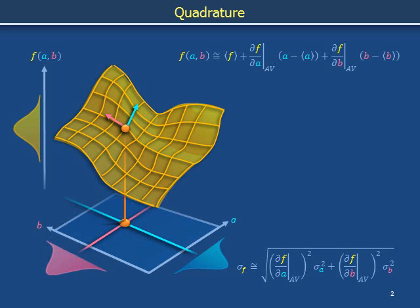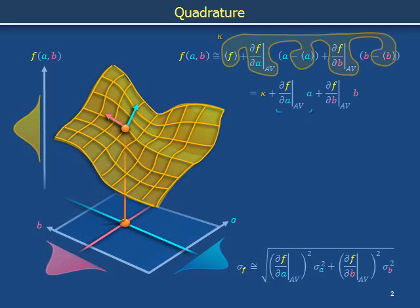There are two variables on the right-hand side of this equation: A and B. The constants in this expression are the quantities surrounded by angle brackets, along with the partial derivatives evaluated at the average values of A and B. Together, these form an additive constant that we refer to as kappa. Writing kappa out front leaves behind two products: the first is the slope of F along the A direction multiplied by the value of A, and the second is the slope of F along the B direction multiplied by B. We refer to these products as functions alpha of A and beta of B respectively. F is a sum of kappa, alpha, and beta.